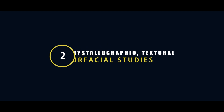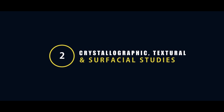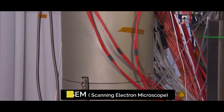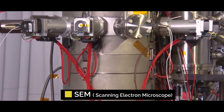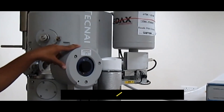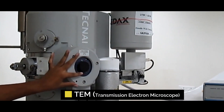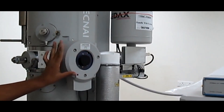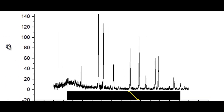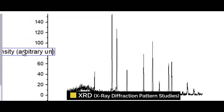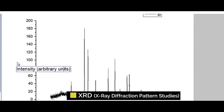Unit 2 will discuss crystallographic, textural and superficial studies with the help of SEM, i.e. scanning electron microscope, TEM, i.e. transmission electron microscope, and XRD, i.e. X-ray diffraction pattern studies will be done in this unit.